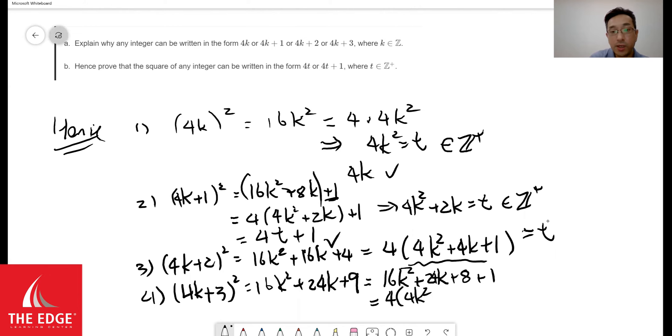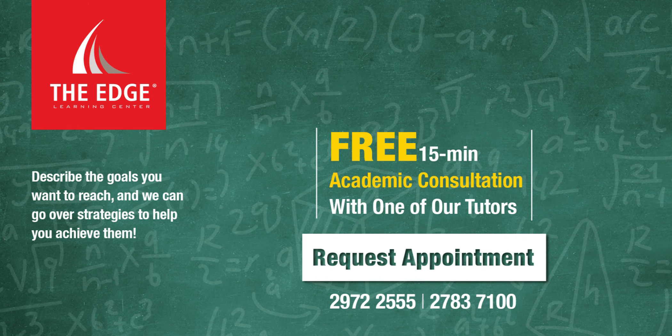I get 4k squared plus 6k plus 2, everything plus 1, and that's going to be my t. So we have proven that every single integer can be written in the form either 4t or 4t plus 1. So that's it. Thank you.